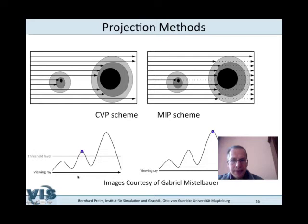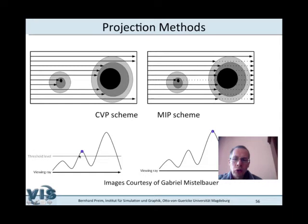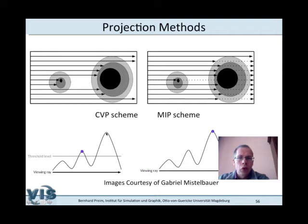Comparing MIP and CVP: if a ray encounters a first local maximum below the threshold, continues to a minimum, then rises above the threshold and reaches a local maximum, CVP stops there and projects that value. MIP continues all the way and finds an even higher global maximum. This is illustrated schematically: with MIP, we go all the way and show the global maximum; with CVP, we stop at the first local maximum above the threshold, which often represents the closest vessel of interest.